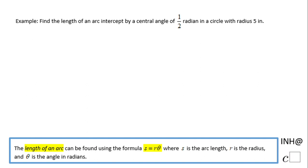Welcome or welcome back to I Need Help at C Square. In this example, we're going to find the arc length with a central angle that is half a radian and the radius is five. If you're a visual person, half a radian would be about 29 degrees, just in case.